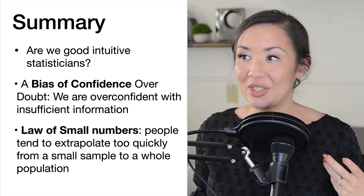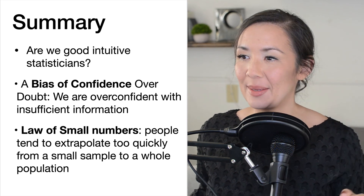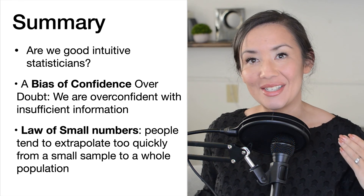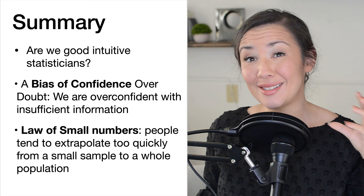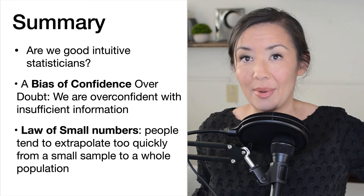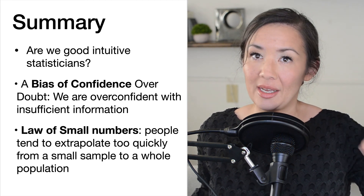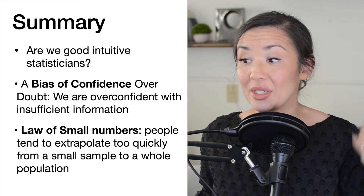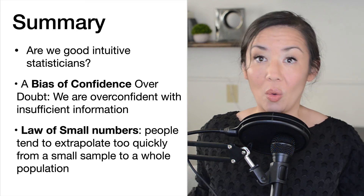In summary: are we good intuitive statisticians? No, unfortunately. There's a bias of confidence over doubt — we are confident with insufficient information. When we have a small bit of information, we tend to believe it applies to the entire world or population. But that small amount of information can be highly biased by sampling. The law of small numbers is that people tend to extrapolate too quickly from a small sample to the whole population.